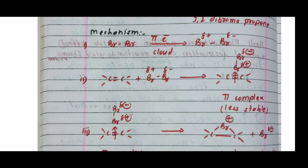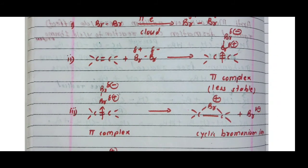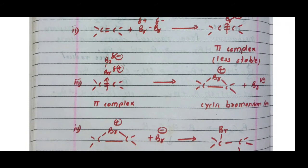Step two: the alkene C=C plus the polarized Br molecule — the positive end of the polarized bromine molecule is attracted by the pi electron cloud to form a comparatively less stable pi complex. The pi complex shows δ− on one Br and δ+ on the other, attacking the carbon-carbon double bond. This pi complex is less stable.